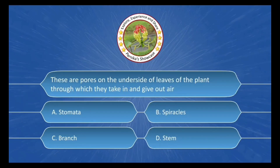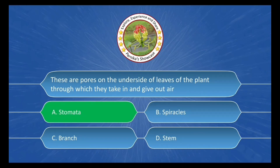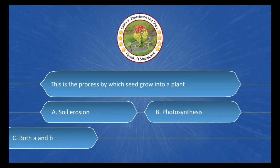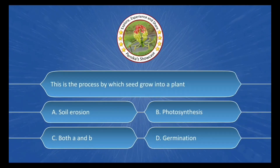Next question: These are the pores on the underside of the leaves of the plant through which they can take in and give out air. The options are: A. Stomata, B. Spiracles, C. Branch, D. Stem. The correct answer is Option A: Stomata.